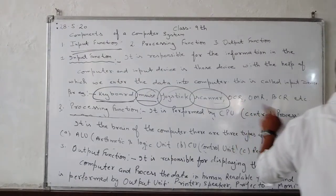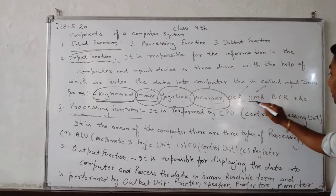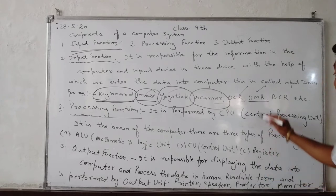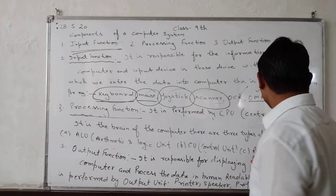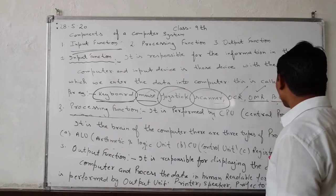OCR, OCR is a full form optical card reader. Next OMR, OMR is a full form optical mark reader. Next DCR, and DCR is a full form bar code reader.